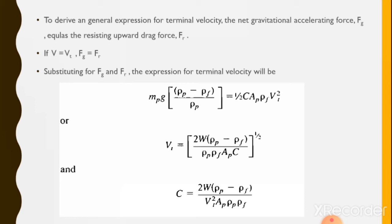To derive a general expression for terminal velocity, the net gravitational accelerating force Fg equals the resisting upward drag force FR. As discussed earlier, this condition holds when V equals Vt and Fg equals FR.